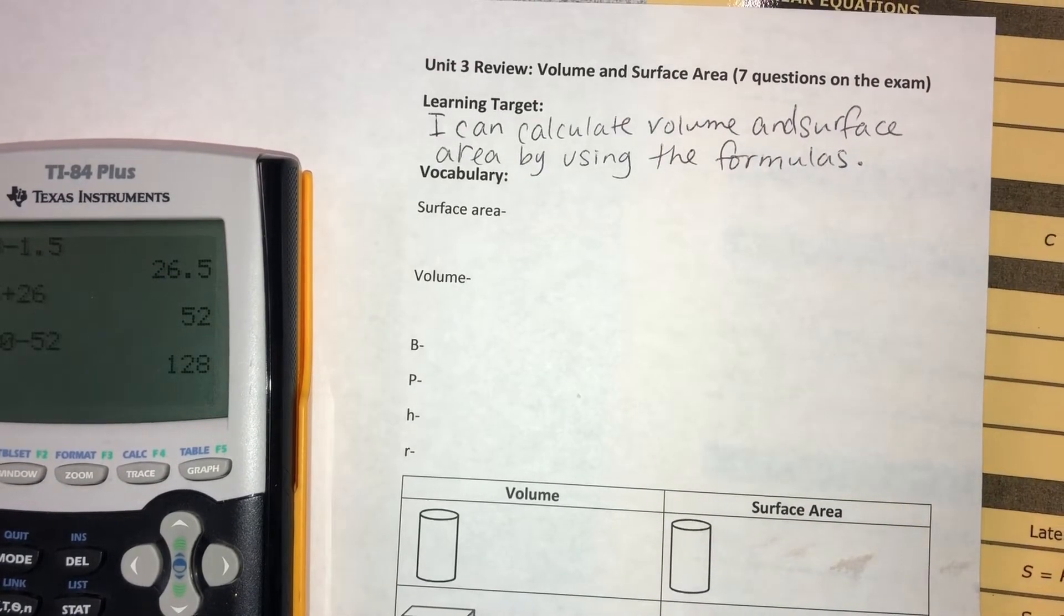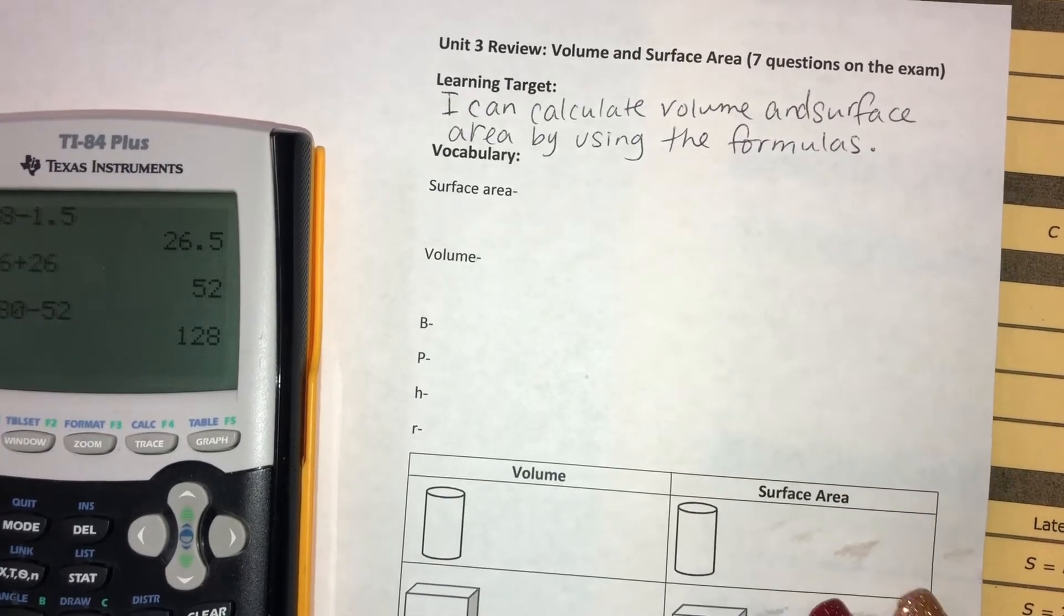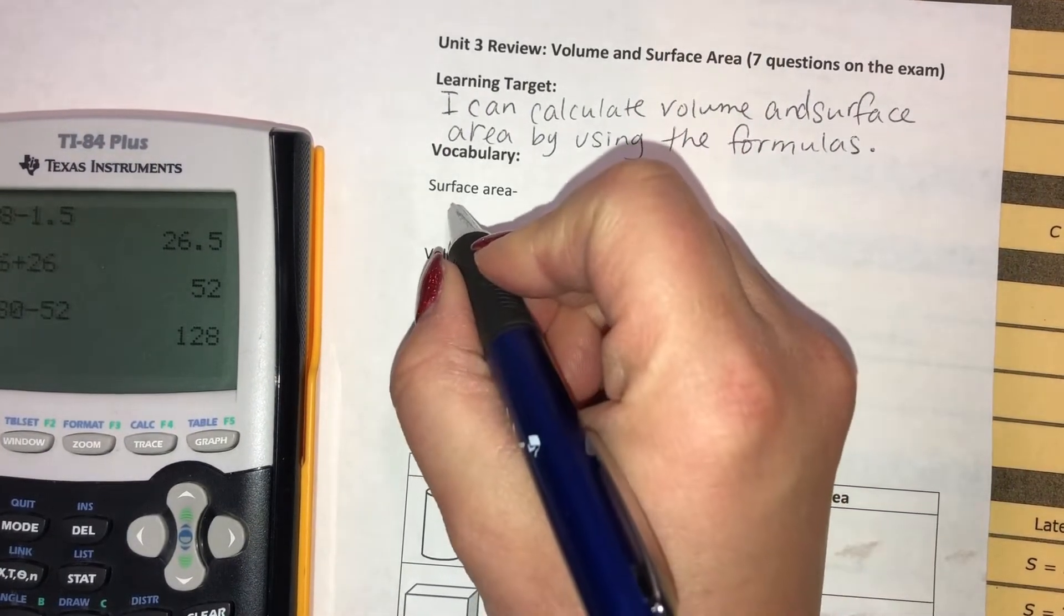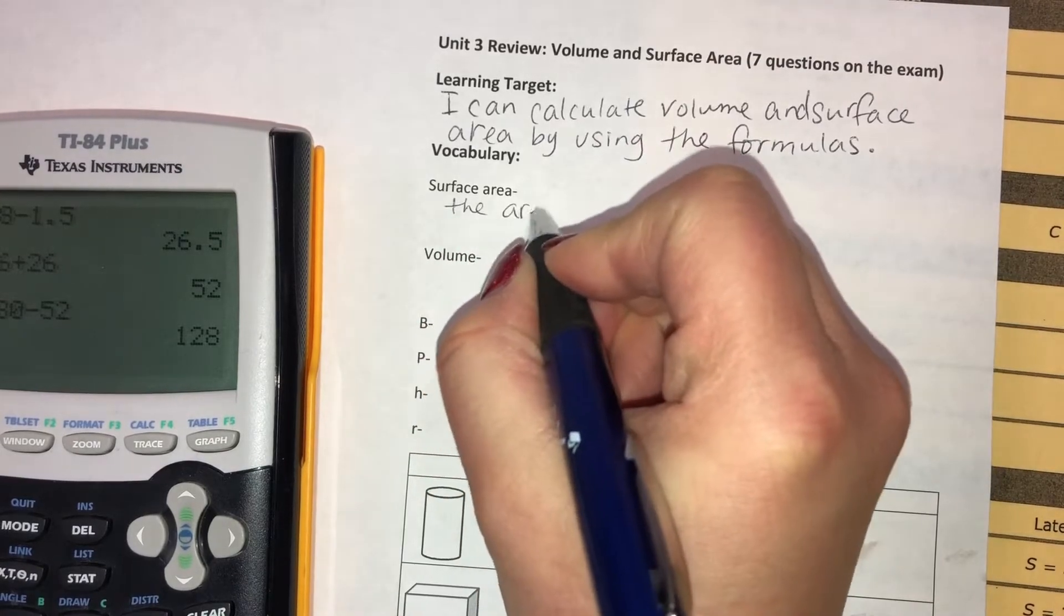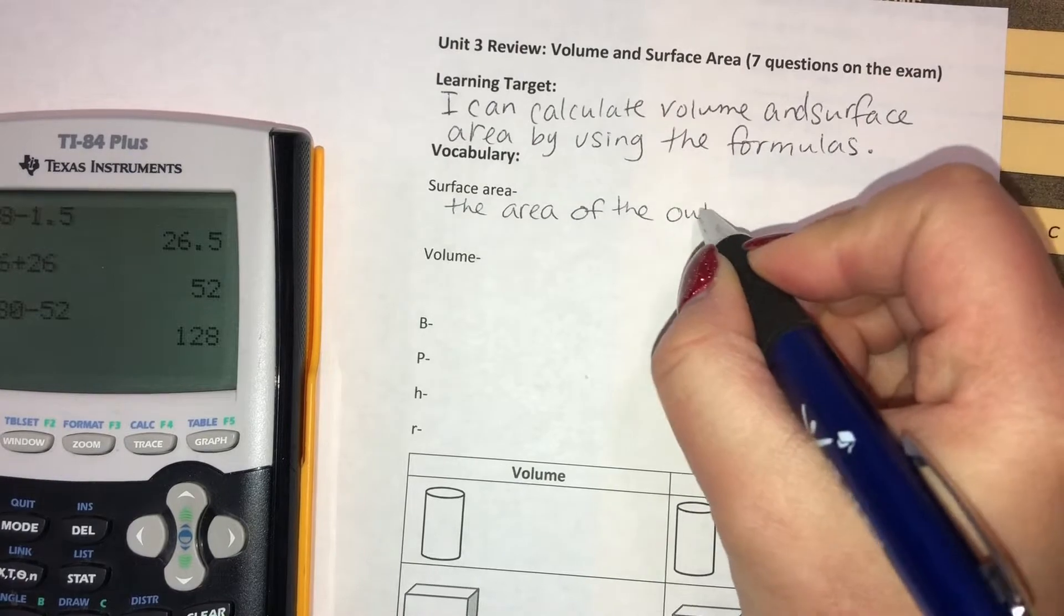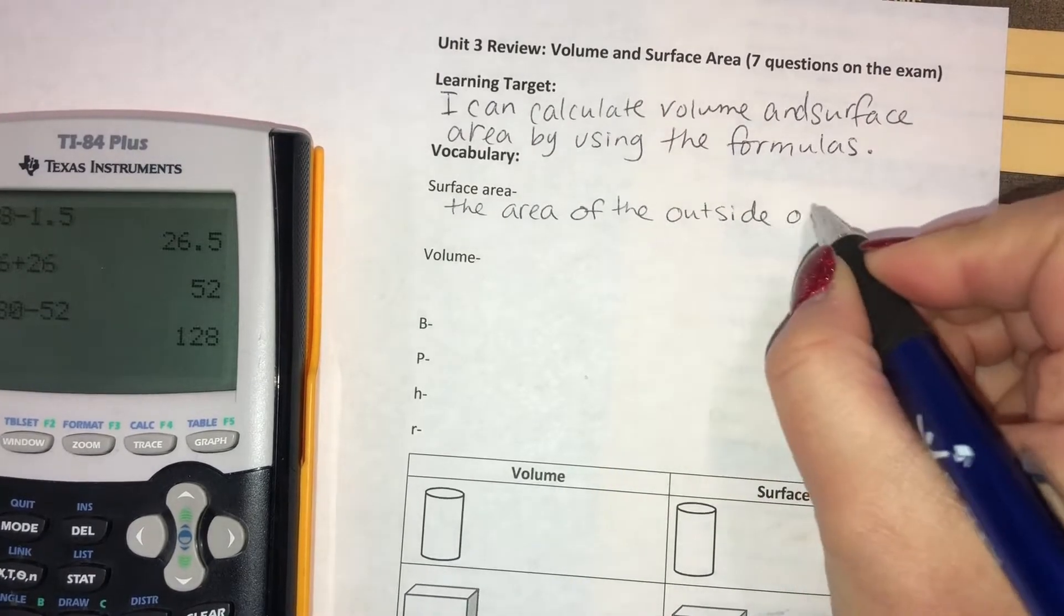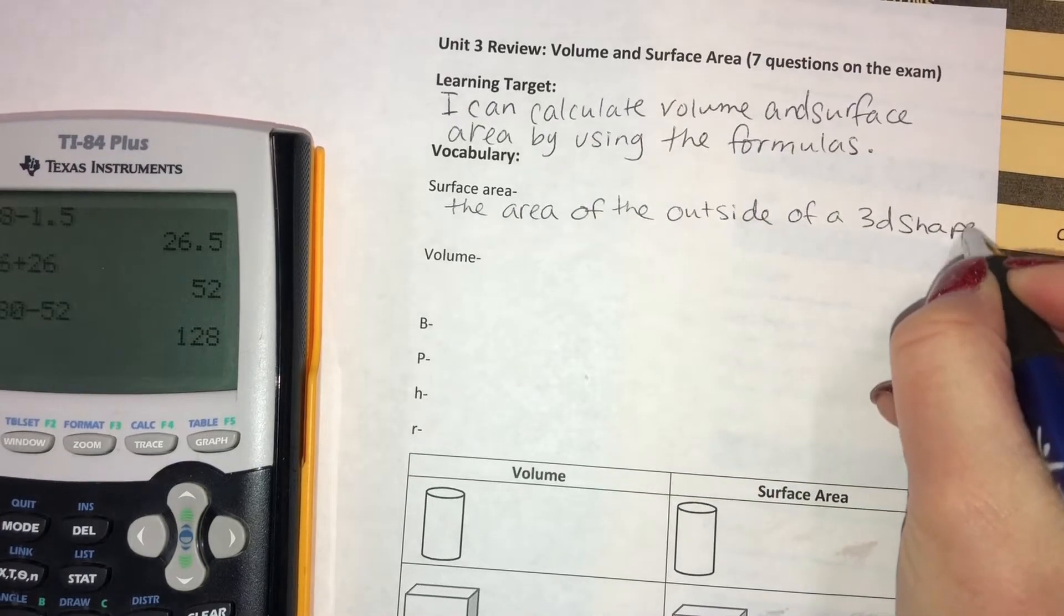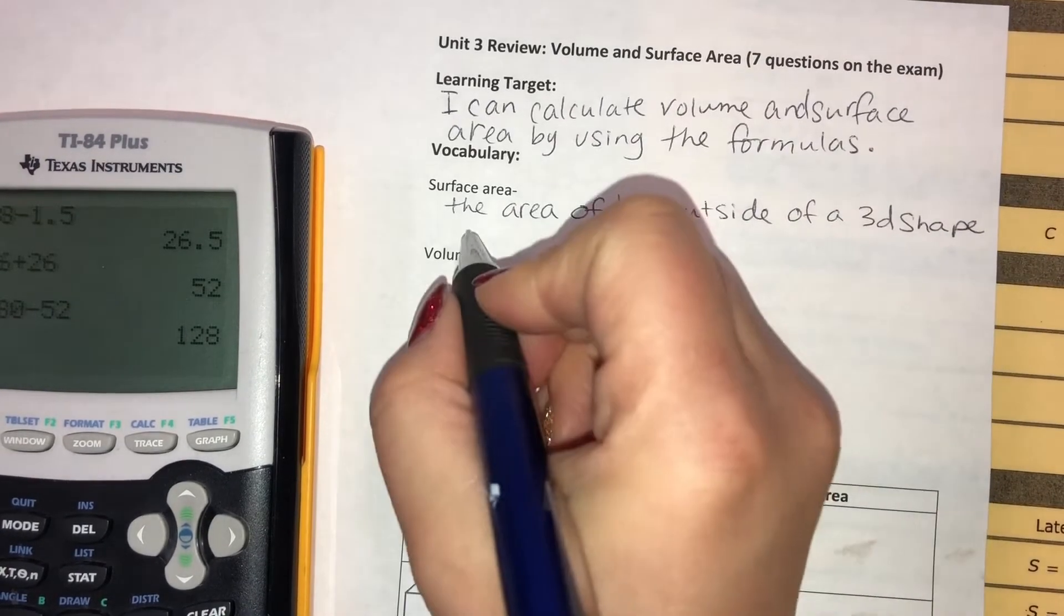Make sure you've got a formula chart when you go to take your semester exam. Some vocabulary is surface area and volume. Surface area is the area of the outside of a 3D shape. And then there's two different types of surface area.